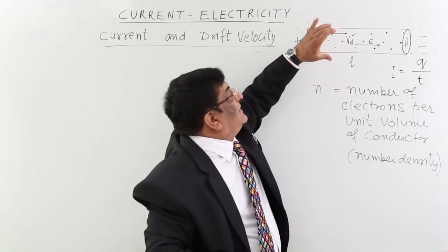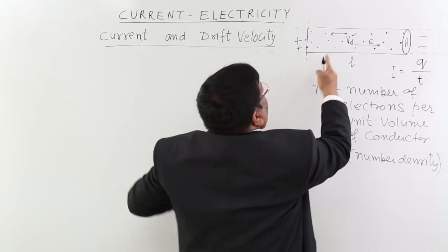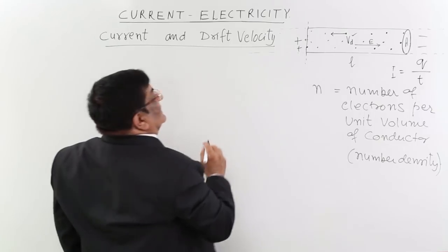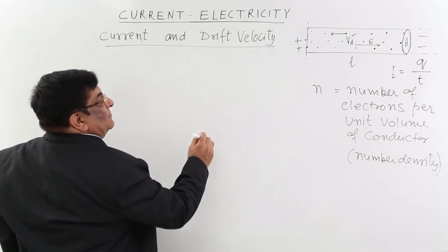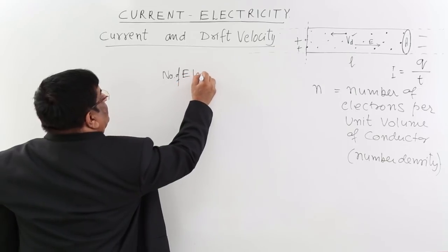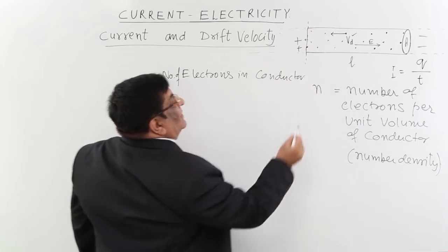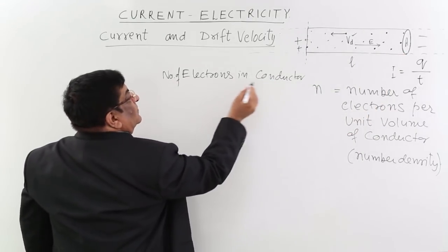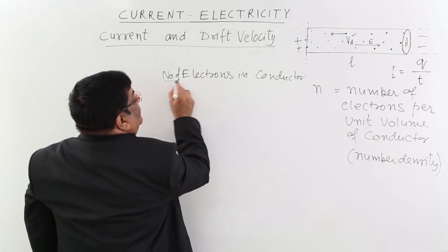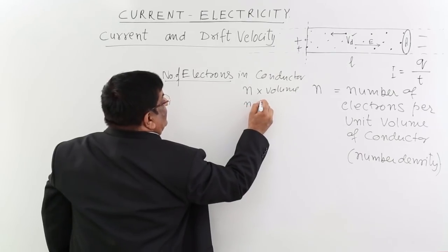So how much charge is at present in this conductor — the charge Q that will pass this cross section? I know that on one electron the charge is e. To find how many electrons there are, I calculate the number of electrons in the conductor having length L and area A. Volume is A times L, and in one unit volume there are n electrons. So the number of electrons is n times A times L.